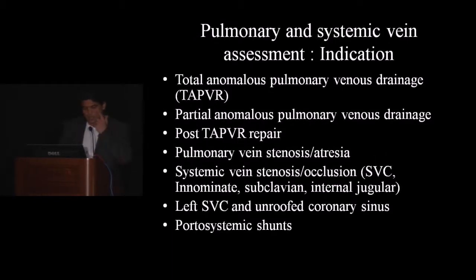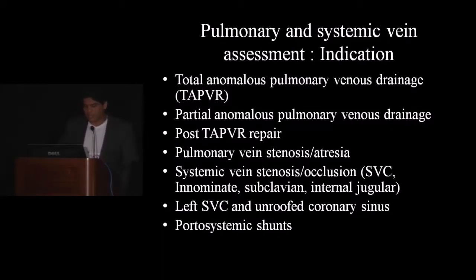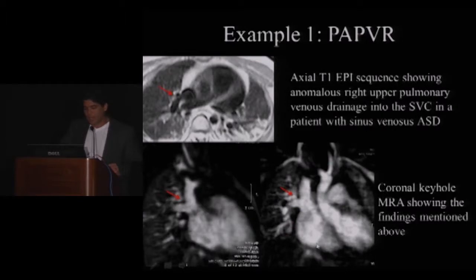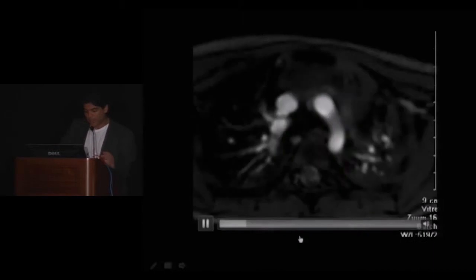I'll go case-based and share examples where MR angio and MRI have been very helpful in looking at anatomy and answering clinical questions. Clearly, total anomalous pulmonary venous connection, partial, and post-repair cases are well-suited to this technique. My first example is a patient with anomalous partial venous connection, showing the right upper pulmonary vein hooking anomalously and draining into the SVC. This is demonstrated on the black blood technique and coronal reconstructions from a 3D MRA.